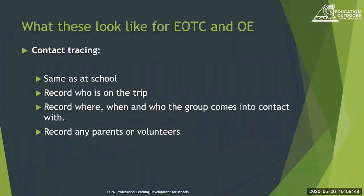Contact tracing is the same as at school — you'll be recording who's on the trip anyway, so that's normal practice. A little bit more detail is needed around where and when you're at a particular place on your trip and who the group comes into contact with. If you're getting a talk from a park ranger, you'd want to capture their details — two methods of contact, like phone number and email. The same applies with parents or volunteers: make sure they're on your contact list.